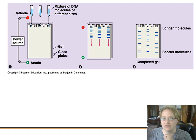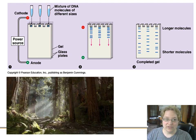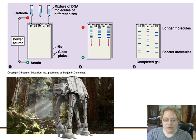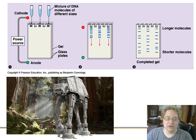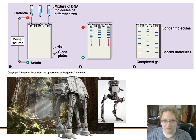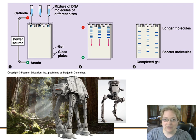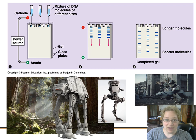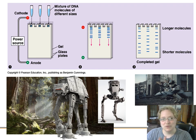Shorter pieces move much faster than longer pieces because the gel matrix — made of agar — is harder for large molecules to navigate. To illustrate: if you're invading the forest moon of Endor, your AT-AT all-terrain armored transports are going to be slow, having to stop and shoot down trees. Your AT-ST scout walkers will move at a better pace, and scout troopers on speeder bikes move the fastest. Likewise, the smallest DNA pieces travel the farthest through the gel.